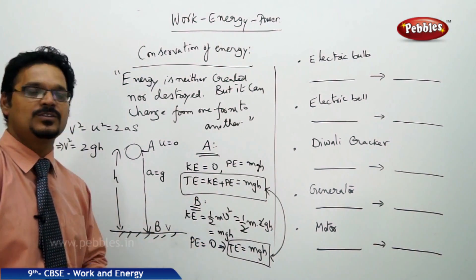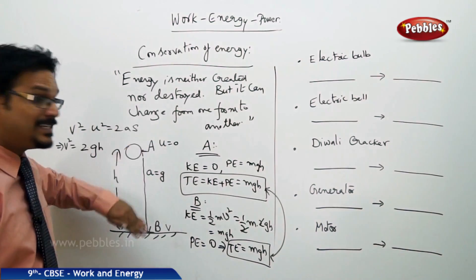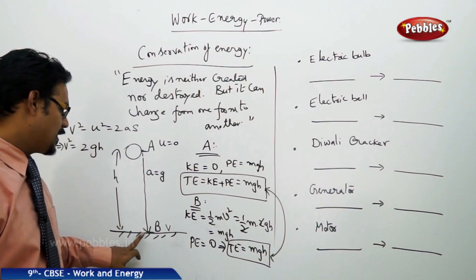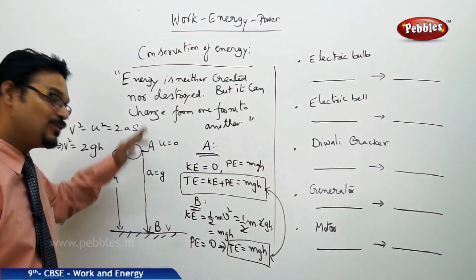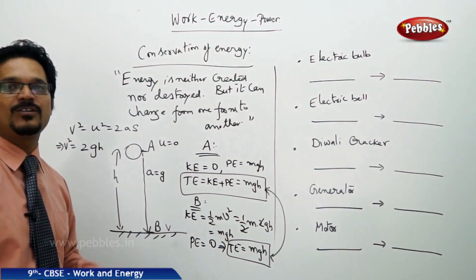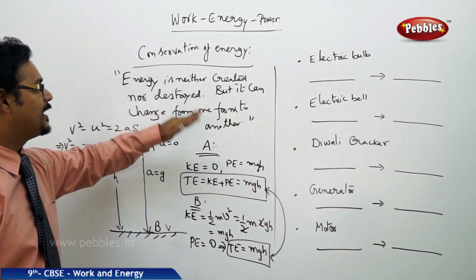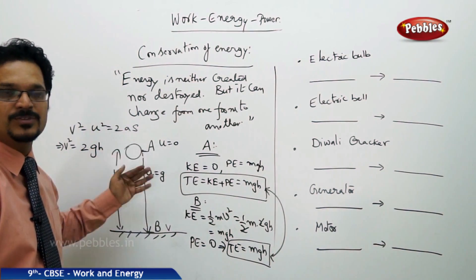So see, these two: here the total is mgh, here the total is mgh. So wherever you go, the energy is changing. At the highest point you have potential energy, at the ground point you have kinetic energy, but the total energy is always constant. That's why conservation of energy says you cannot create or destroy it, but you can change from one form to another.